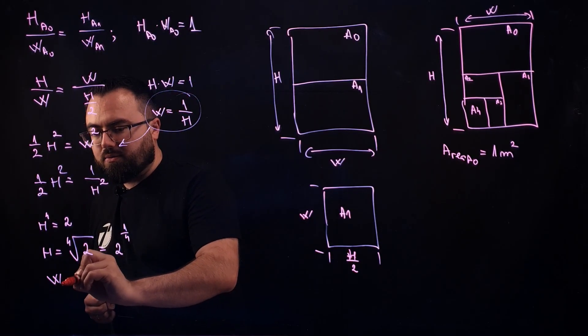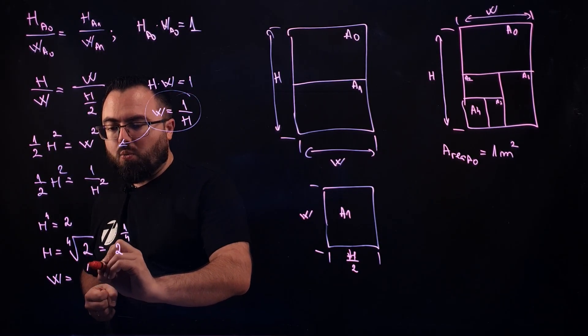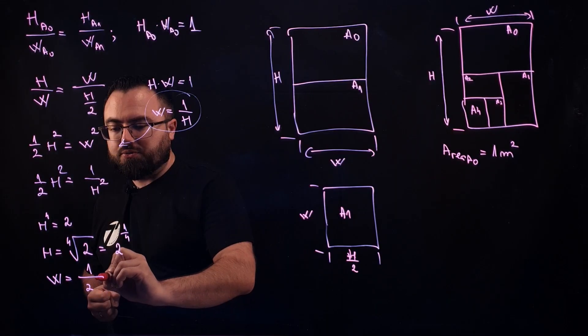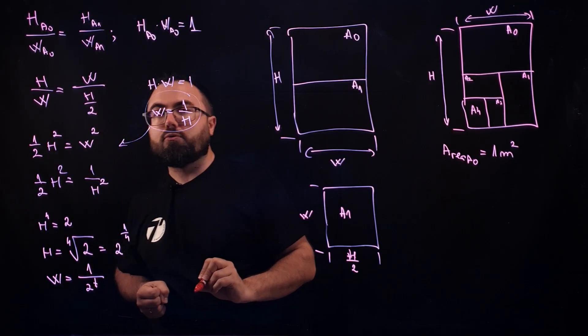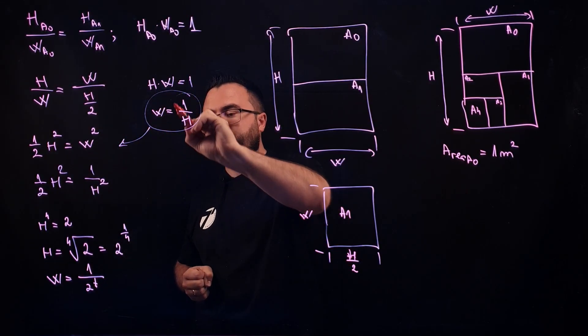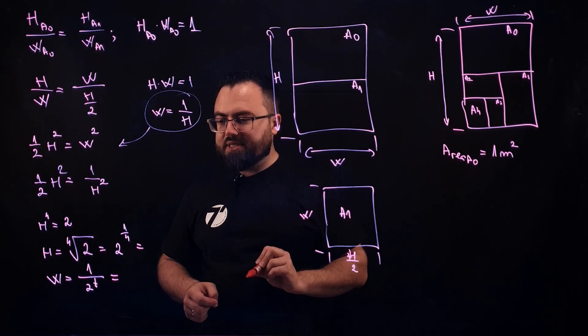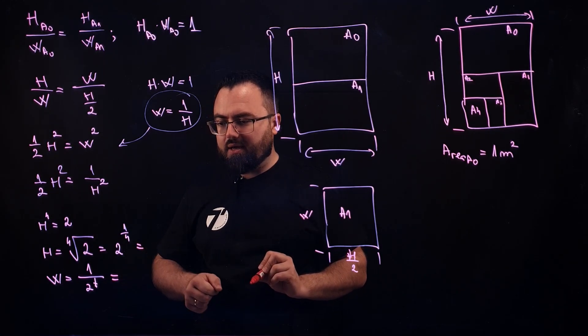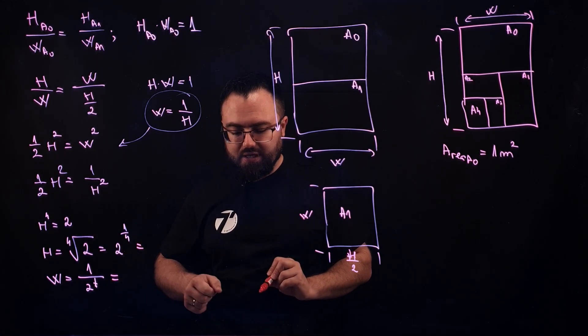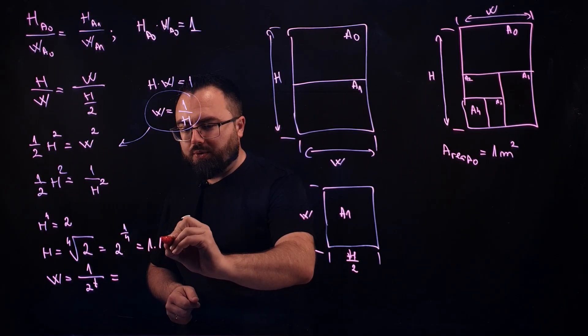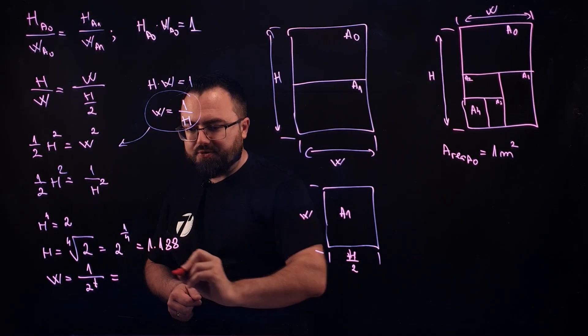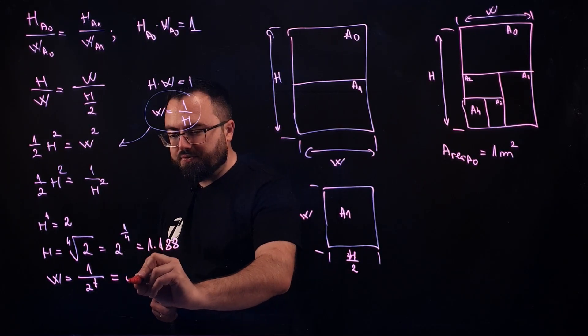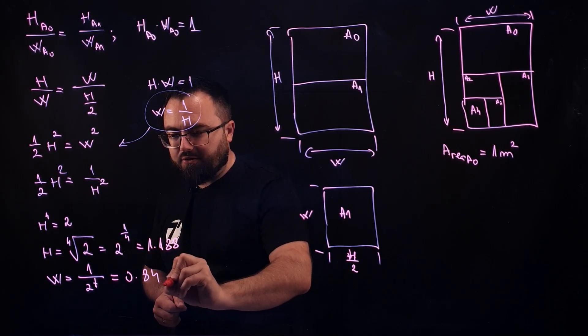And the width would be 1 over 2 to 1 over 4 because we have here the same property. And when we take the math here, we see that this is actually equal to 1.188. And this one right here is equal to 0.84.